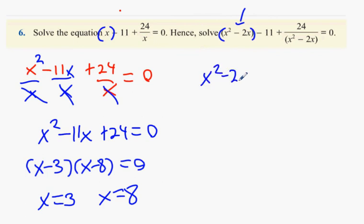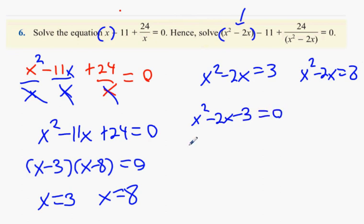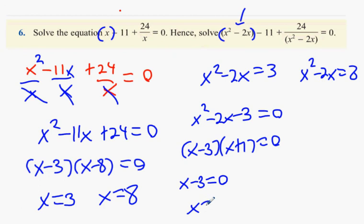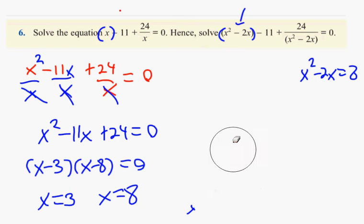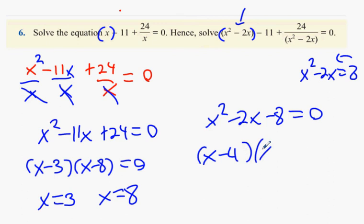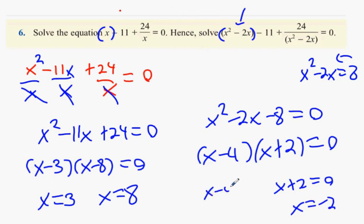Easy enough, right? Move up to the top. Instead of x, what do you have this time? So x squared minus 2x is either equal to 3 or it's equal to 8. So we're going to have x squared minus 2x minus 3 equals 0. That's going to get me x minus 3. That wasn't that bad, was it? That was easy.